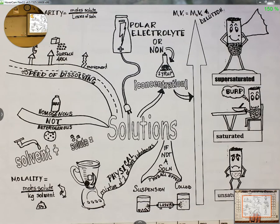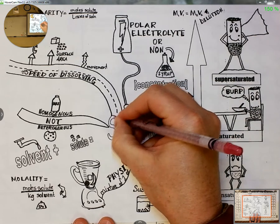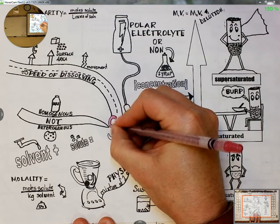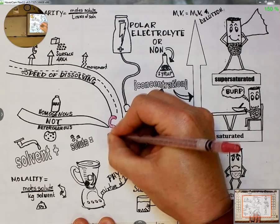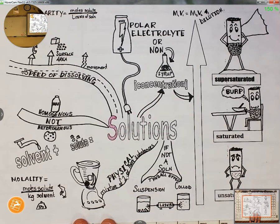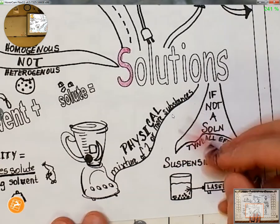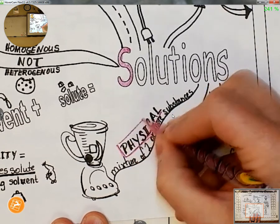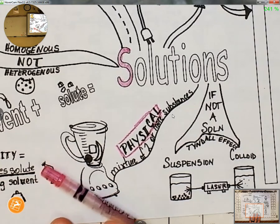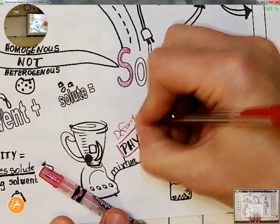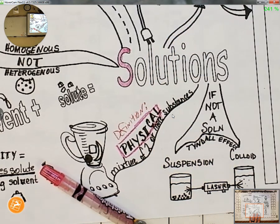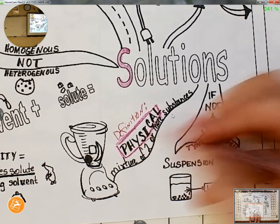We're going to start talking about, first of all, what a solution is — just kind of jog your memory. We need to get a good definition. A solution is a physical mixture of two or more substances.